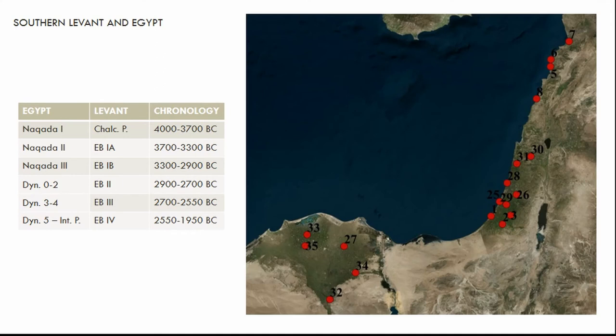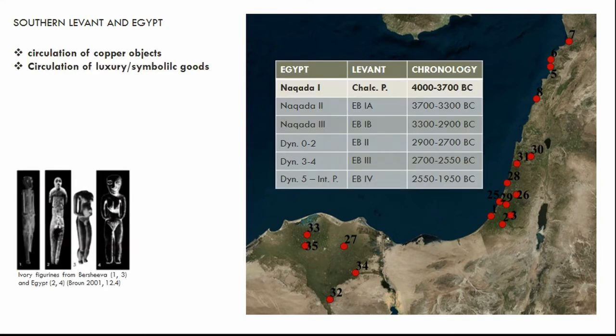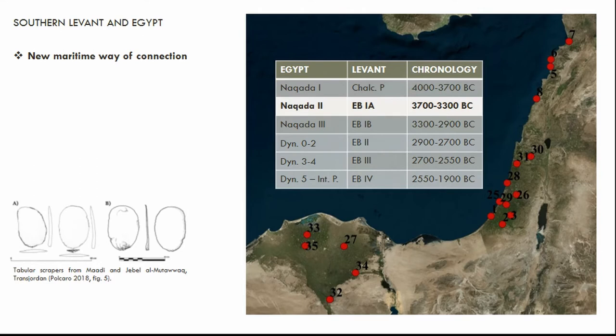The contacts between the Levant and Egypt represent a well-debated subject. The first imported elements found in Egypt are dated to the very beginning of the Chalcolithic horizon and are mainly related to the circulation of copper objects. There is also evidence of this type of contact in a symbolic way, including possible cultic figurines. During the Early Bronze Age 1, new economic impulses created new trade roads.